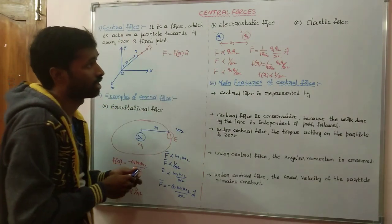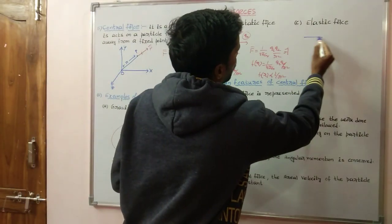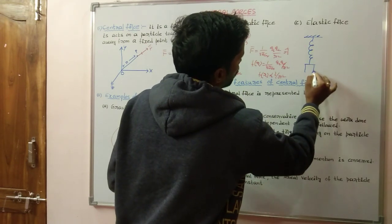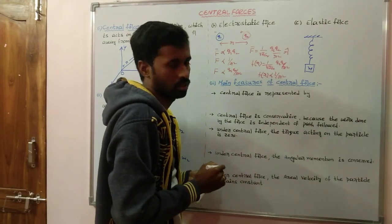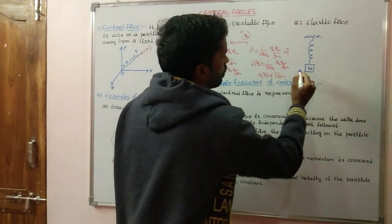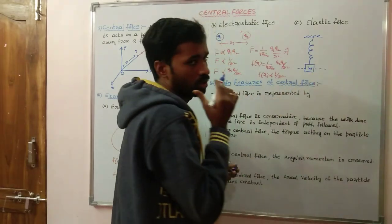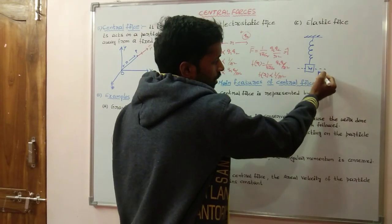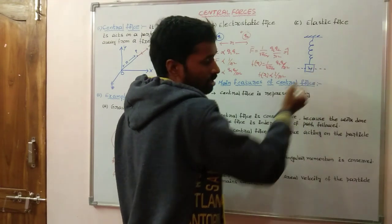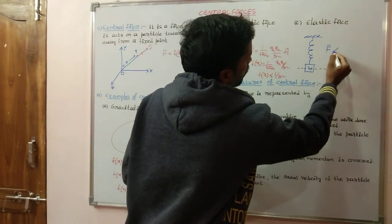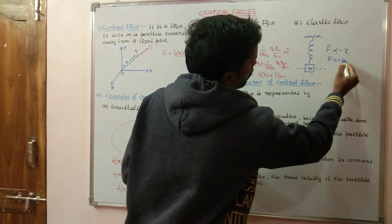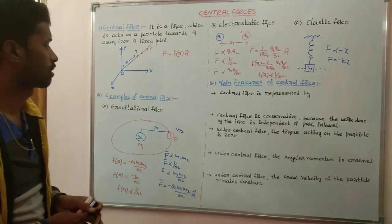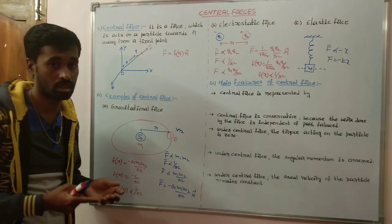Another example is elastic force. Consider a spring where one end is fixed and the other end is connected to a mass object. The mass object moves up and downward about its mean position — this is our center. The central force here is directly proportional to −x, giving F = −kx. This is also one of the best examples of central forces.